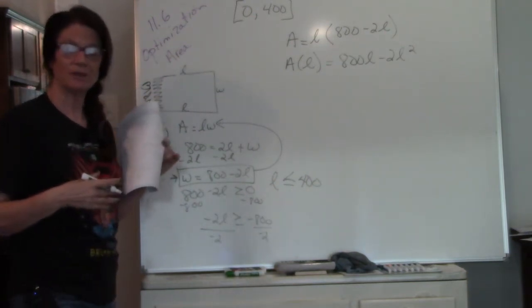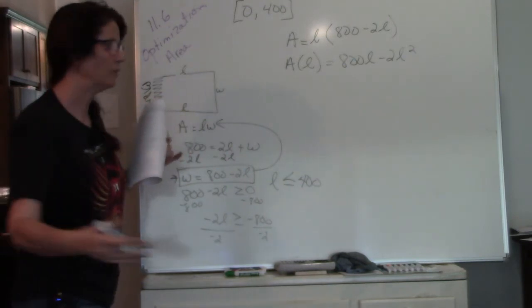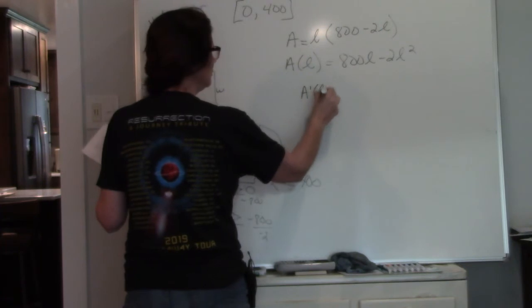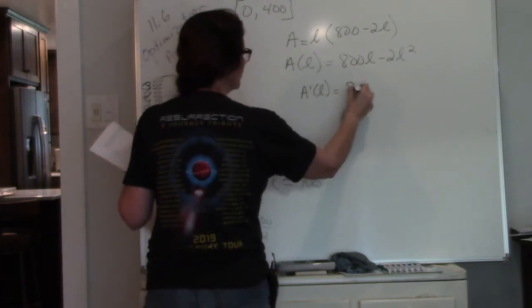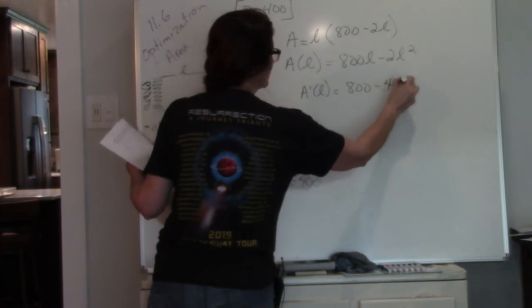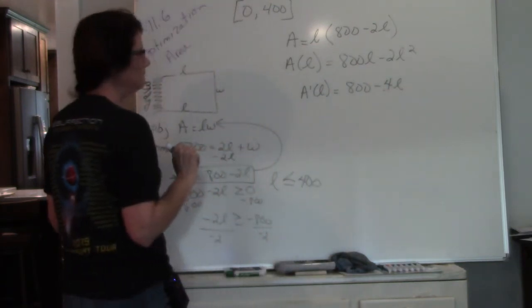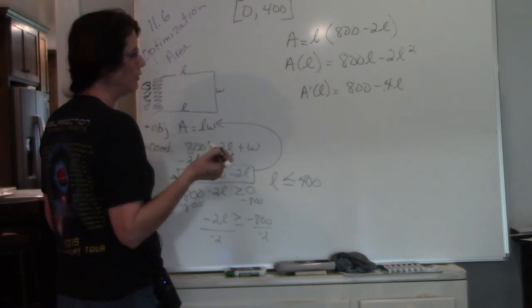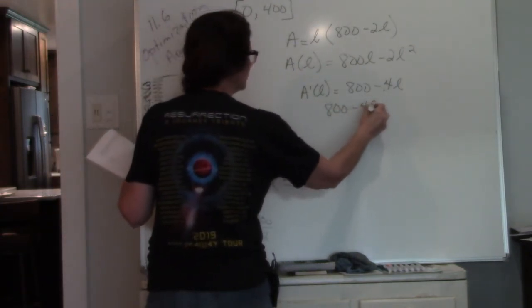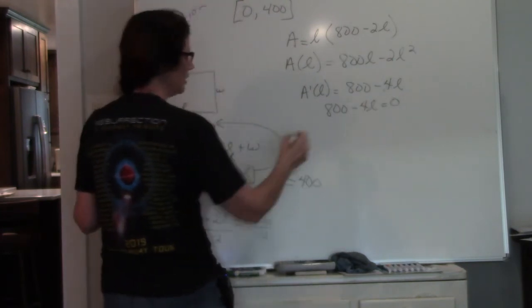I have my function and now I can walk through the process. I'm looking for critical points. To find critical points I have to find my derivative. Using my power rule, now I'm going to set my derivative to 0 and then solve.